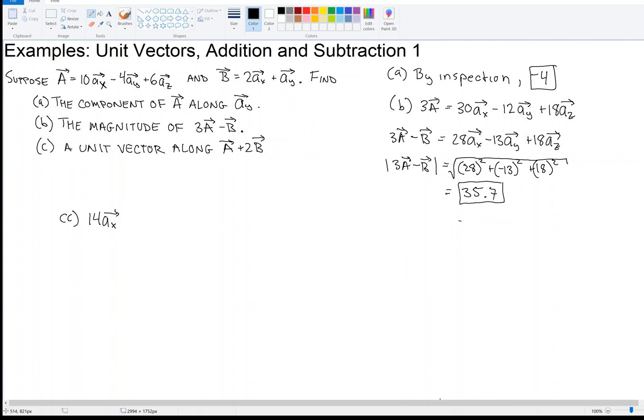And then we have minus 4 in the Y direction. And then 2 times 1. So that's 2 and minus 4. That makes minus 2 in the Y direction. And then finally in the Z direction, we have 6. And then twice 0. So that just still makes 6. So that's our vector A plus 2B.